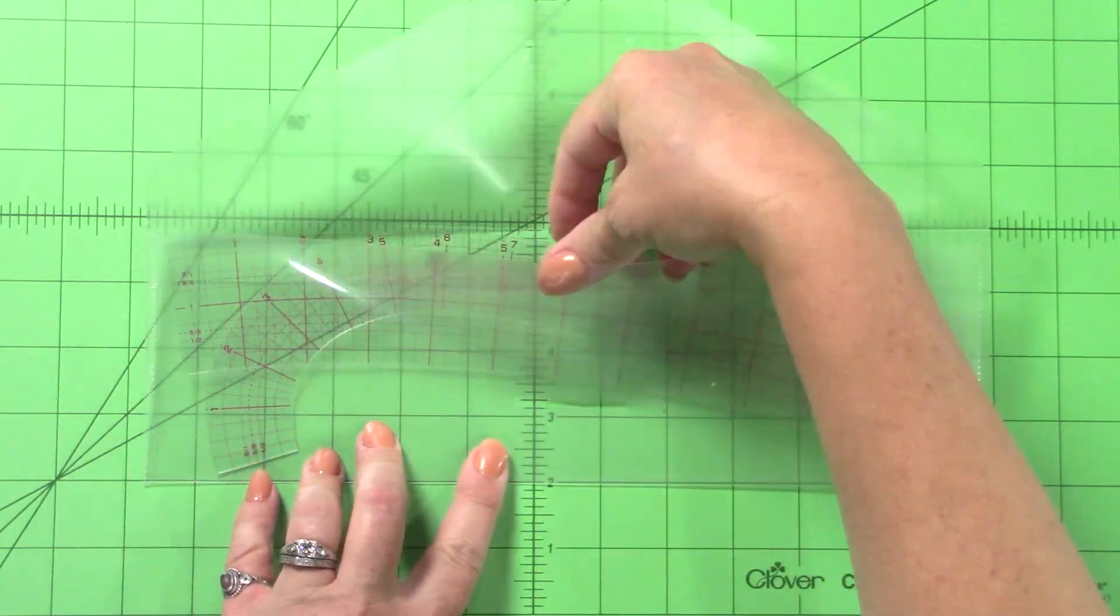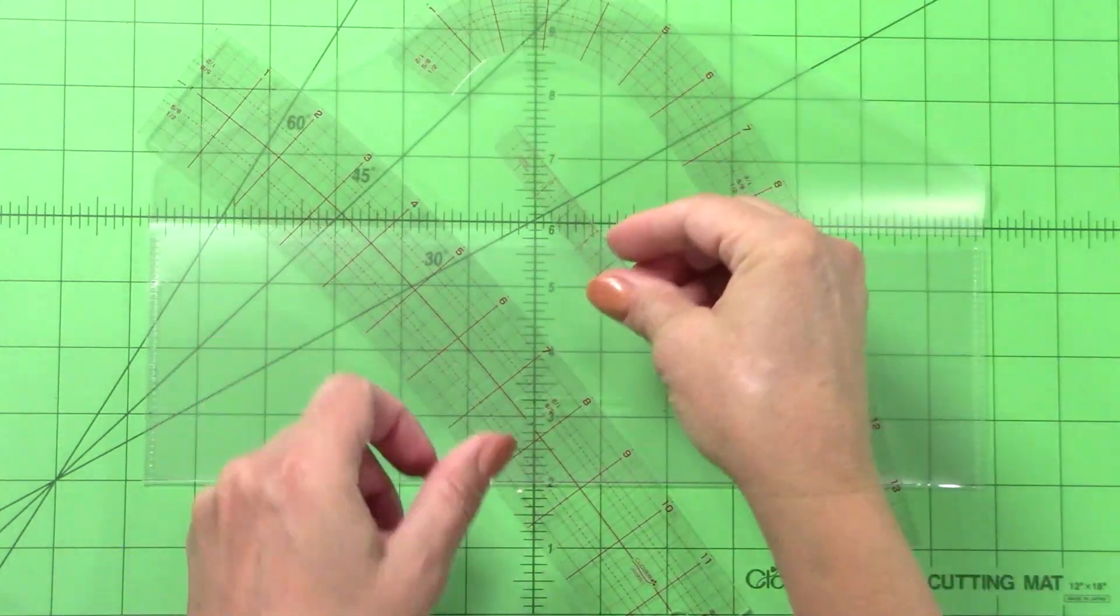All three rulers come with a handy reusable case to keep them organized.